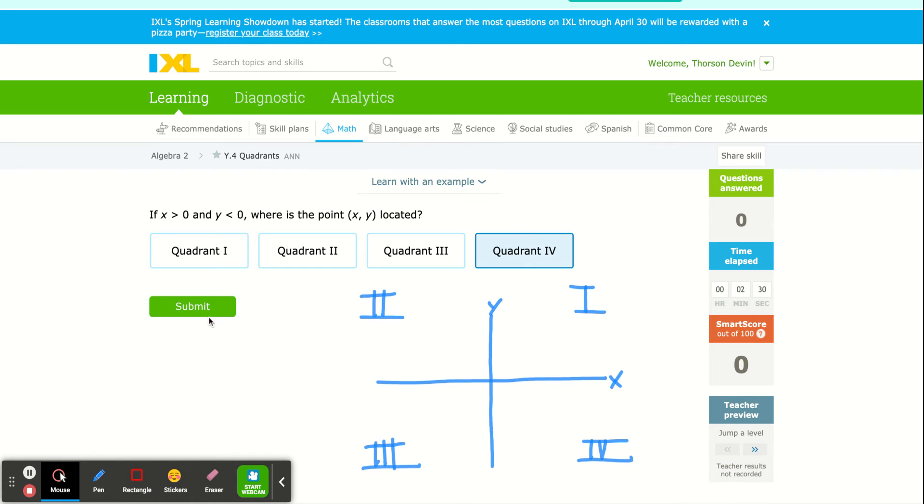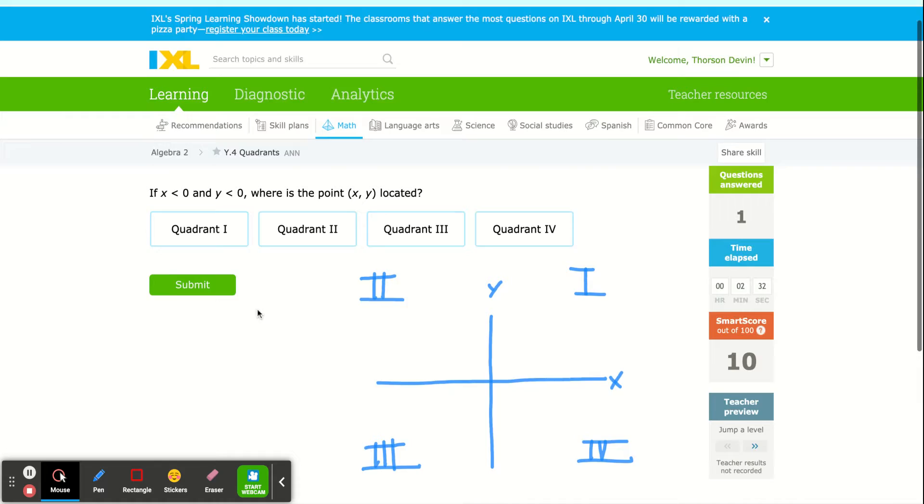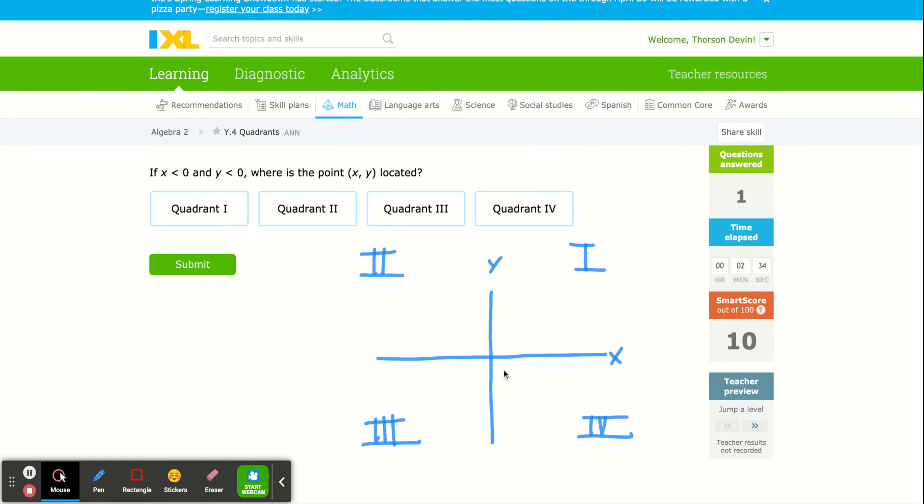That's what it's asking you: which quadrant do you end up in? So again, if X is negative, that puts me to the left. And Y is negative, that puts me down. X is negative, Y is negative. Less than zero. Less than zero means negative. Left and down. That puts me in the third quadrant.